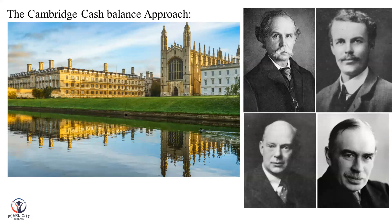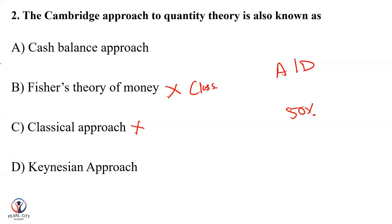You can be asked about Alfred Marshall, Arthur Cecil Pigou, Robertson, and John Maynard Keynes. These economists are associated with Cambridge University and the Cambridge cash balance approach. The answer is the cash balance approach.